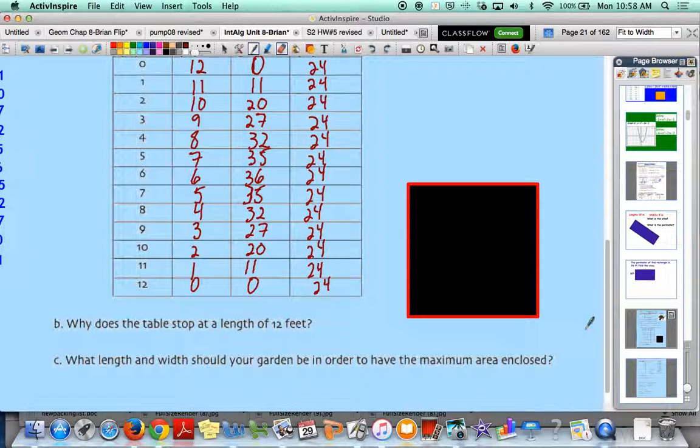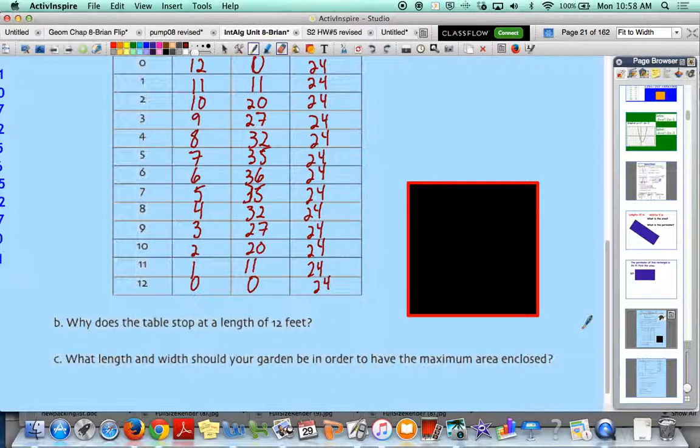Okay. So why does the table stop at a length of 12? Well, if we tried to go up to 13, alright, 13, so let's just think about that. If there's two lengths of 13, we're already up to 26 feet, and we only have 24 feet of fencing. There's no number that we could put here to give us a width of 13 and still stay under or give us exactly 24 feet of fencing. So it stops at 12 because if we didn't, then we would be over 24 feet of fence.